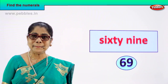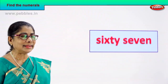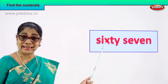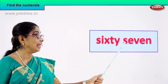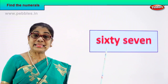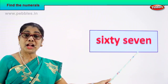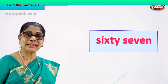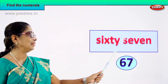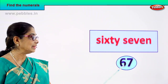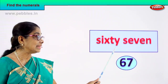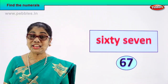Good. Read this: S-I-X-T-Y, sixty, S-E-V-E-N-T-Y, seventy — 67. How do you write the numeral? Six and seven — sixty-seven. Sixty-seven is written as six, seven — sixty-seven. Six and seven — sixty-seven. Good.